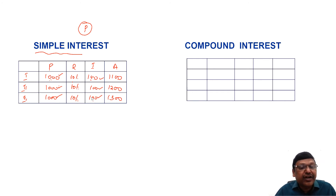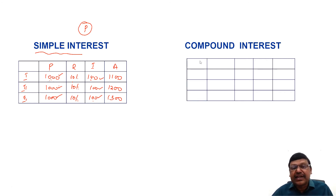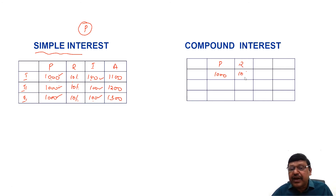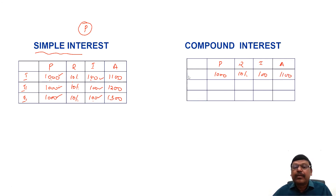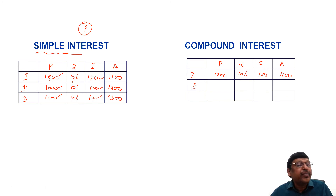Now let's see how interest is calculated in the compound interest scheme with the same 1000 rupees at 10 percent per annum. Interest for the first year is 100, so the total amount to be repaid at the end of the first year is 1100.